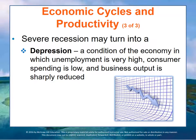Economies expand and contract on a regular basis — this is called the business cycle — in response to changes in consumer and business demand, as well as government spending. The government is a significant part of the economy, and its spending reinforces a flywheel effect that sustains expansion. Although fluctuations are inevitable and somewhat predictable, their effects — inflation, unemployment — can disrupt the lives of individuals who lose their jobs or communities that lose a factory, which is why governments try their best to minimize these events.